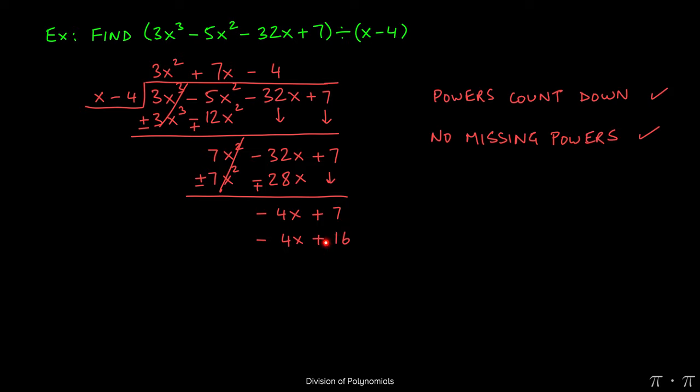Now again, remember we have to subtract, so we need to flip these signs. The negative 4x will change to a positive, and the positive 16 will change to a negative. At this stage, combining like terms allows us to cancel negative 4x and positive 4x.